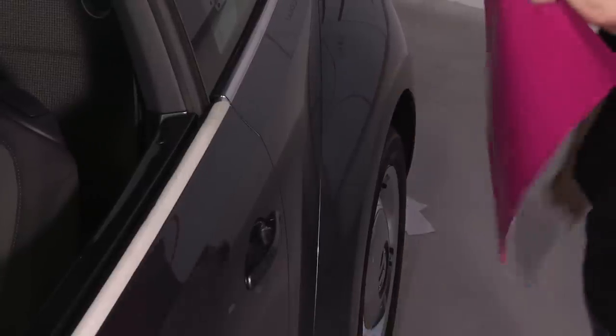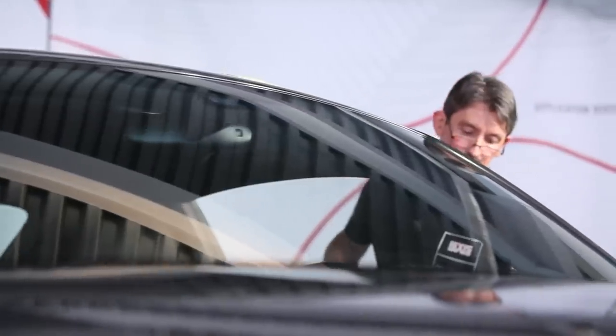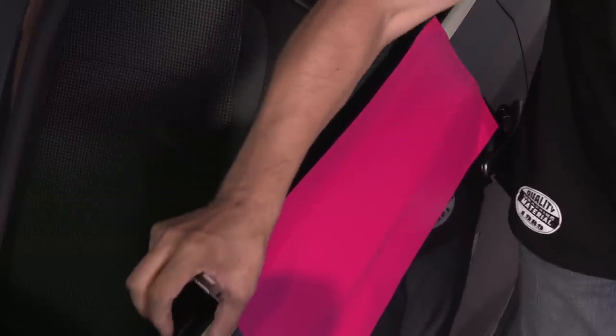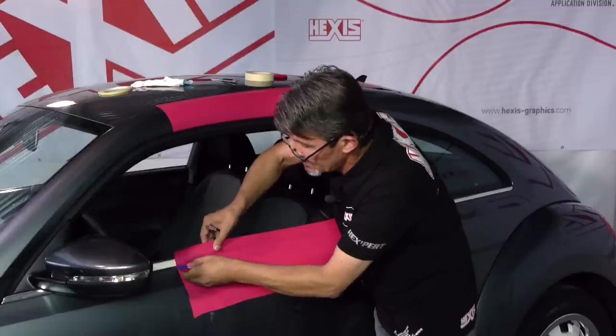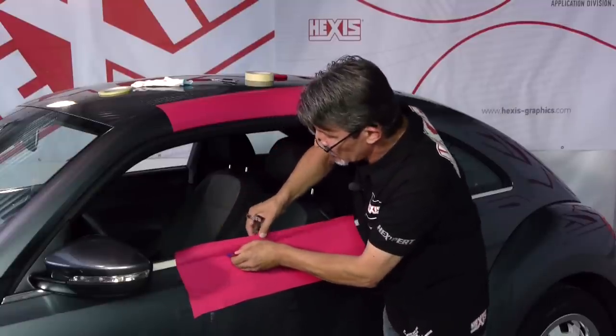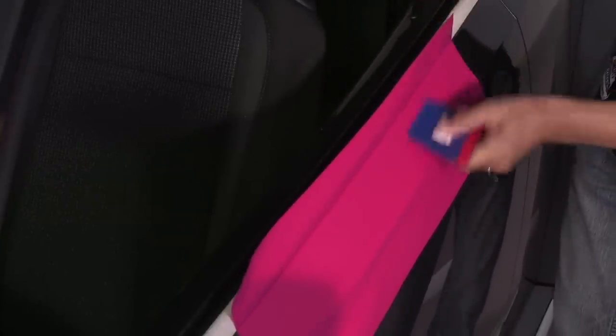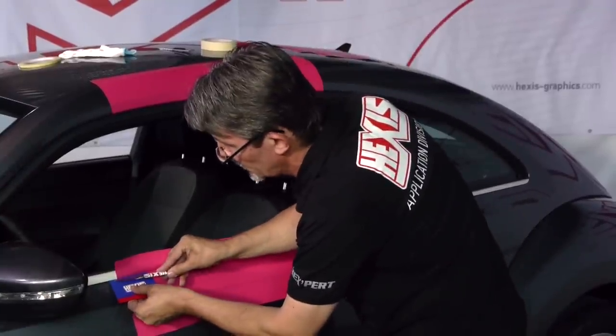Let's look at the next cut. On this piece of trim it's important to lift the vinyl so we can get inside without stretching the film. The cut is done in the same way with the help of the squeegee.